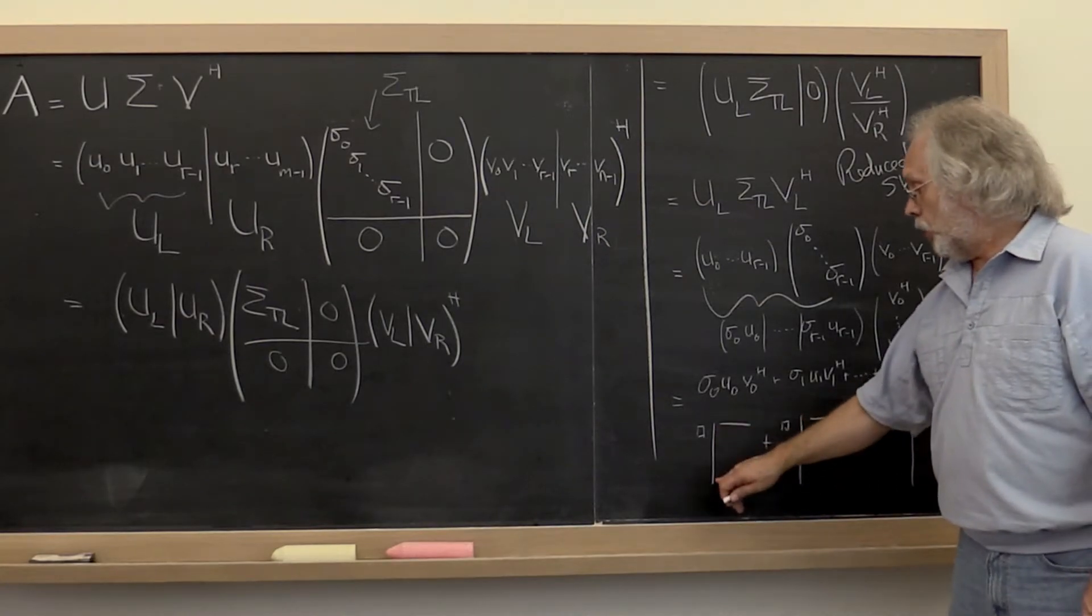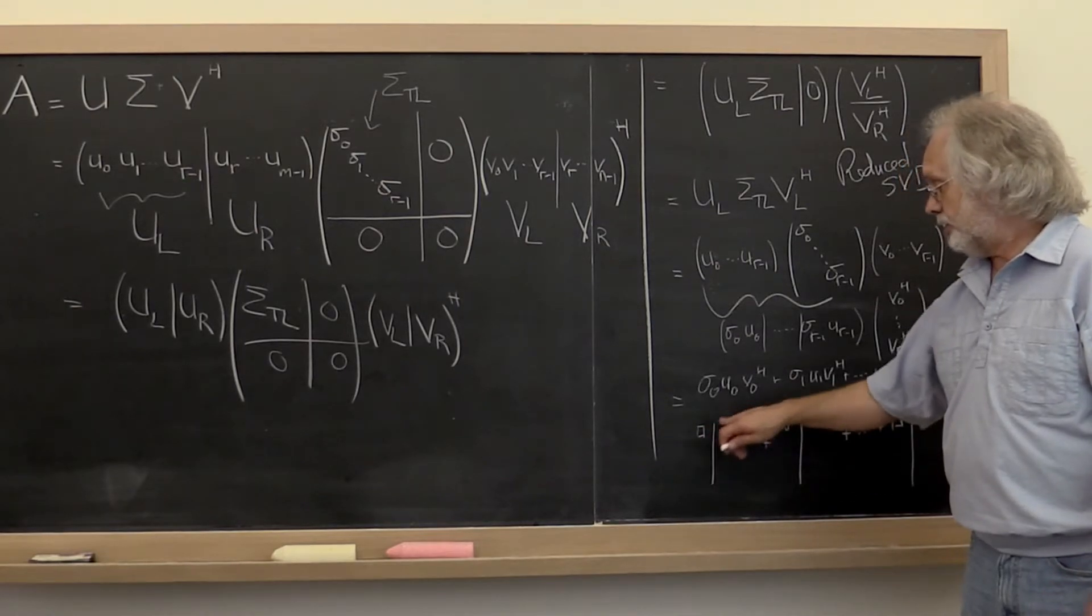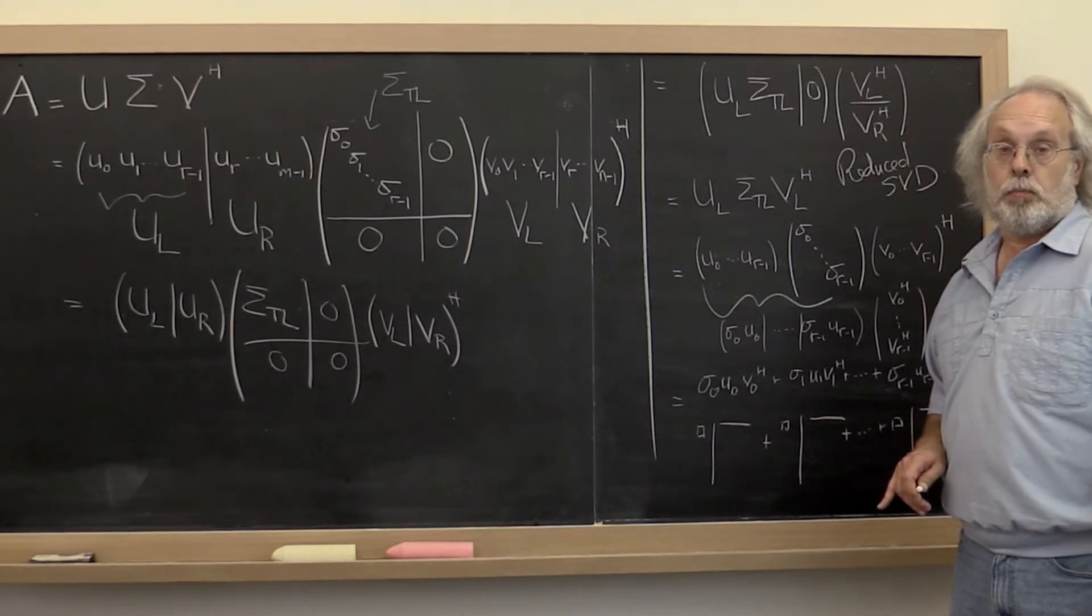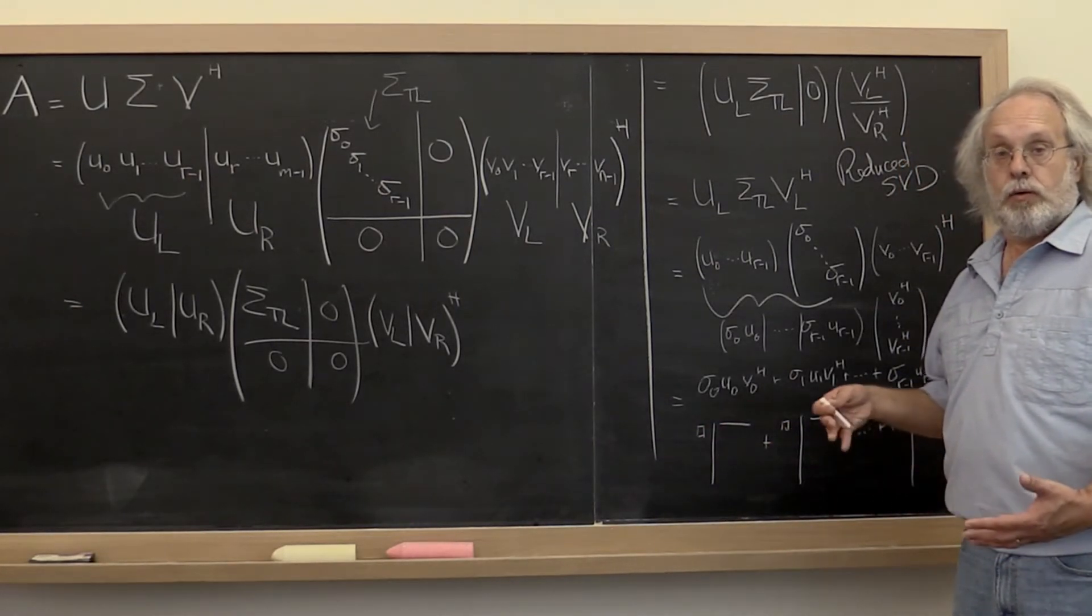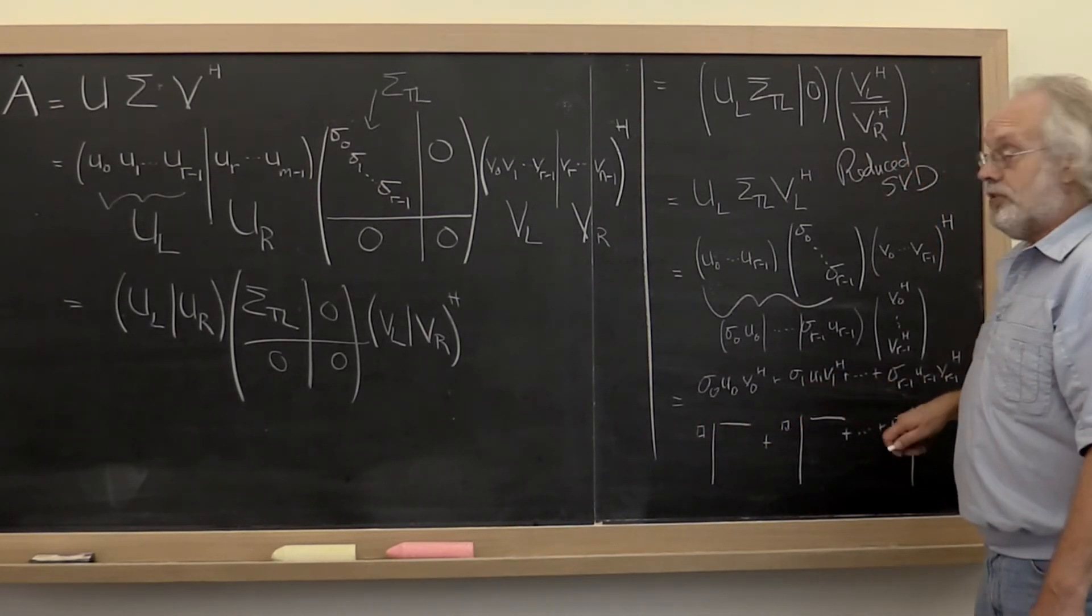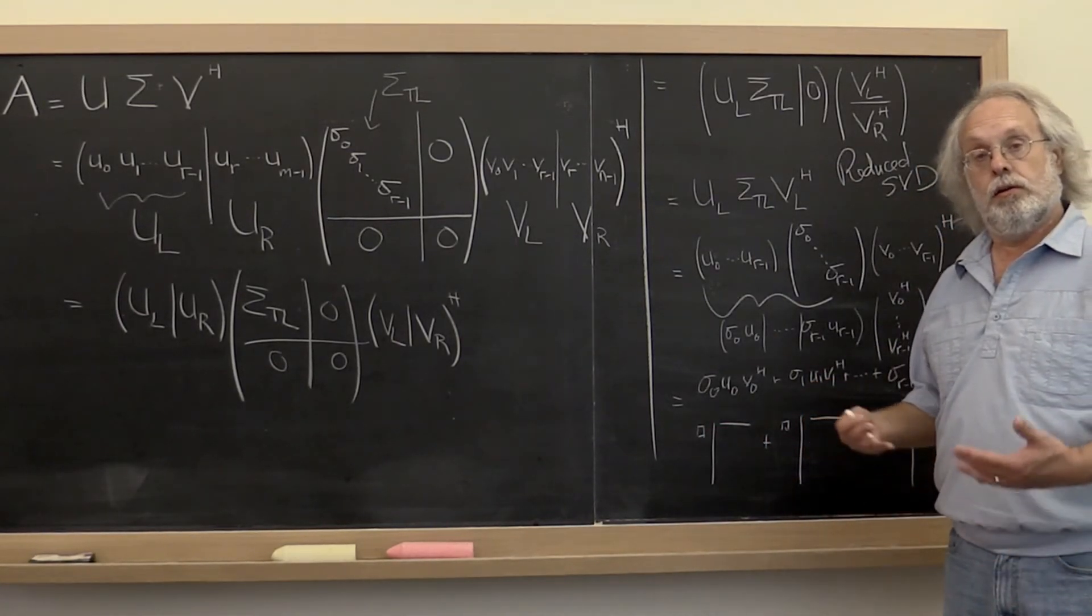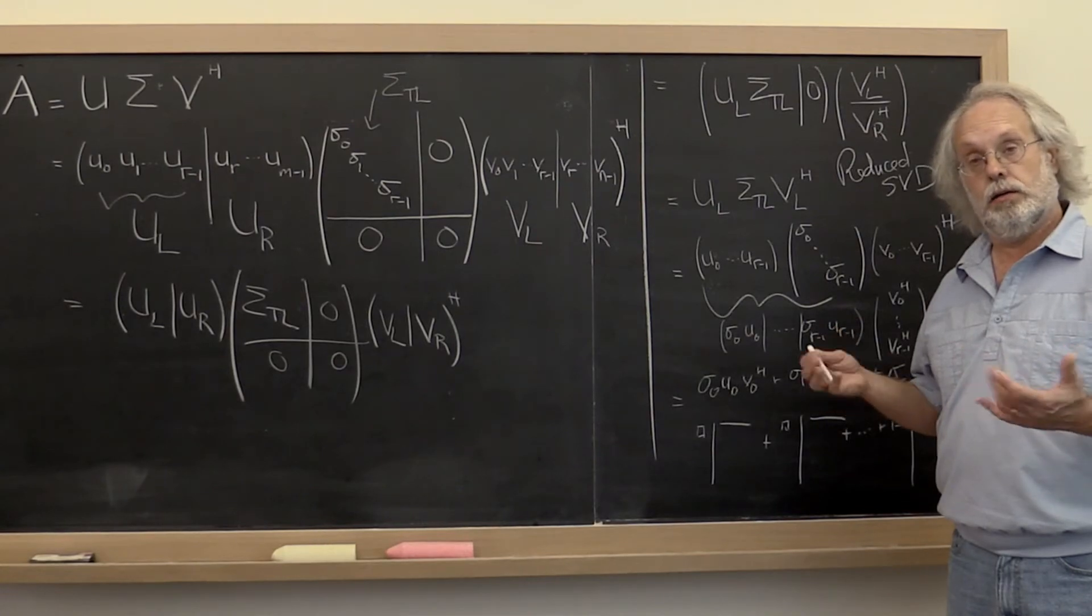Remember that an outer product has rank at most one. Here we know that the vectors involved are of length one. So definitely each of these outer products is of rank one. And then if you scale those by non-zero scalars, then you end up with terms that each are of rank one.